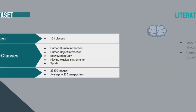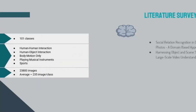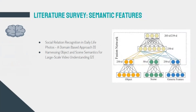We divide the literature survey into three parts. The first is concerned with semantic features. The first paper aimed to detect relationships between people in images using a domain-based approach — such as father-child or siblings relationships. Instead of end-to-end models, the authors imposed domain knowledge from psychology to improve accuracy, developing models to extract domain features like age, gender, and clothing. These features were then input to a model that detects the social relation in the image.